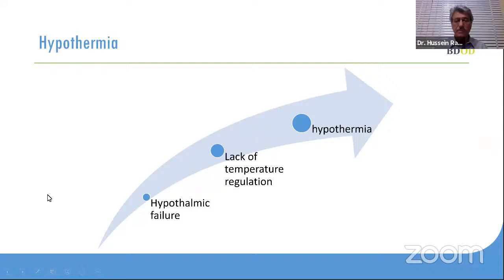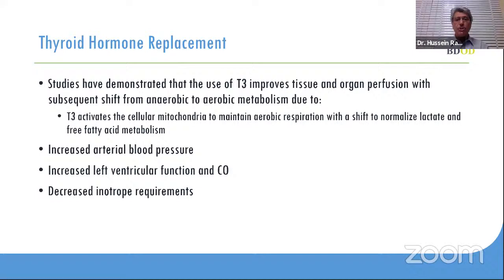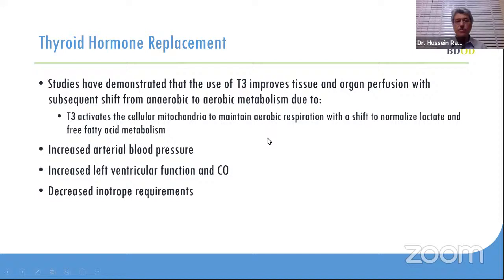The natural question is: if we have this hormonal disturbance due to brain ischemia or brain death, would it make sense that replacing those hormones — meaning thyroxin, cortisol, and vasopressin — could get the brain dead donor into a better situation, decrease circulatory collapse, and therefore improve transplant outcomes? This is theoretical, but we have to prove it. People did conduct studies, though not all were perfect — some were case-control, some retrospective, and some prospective.